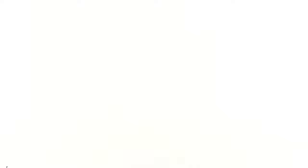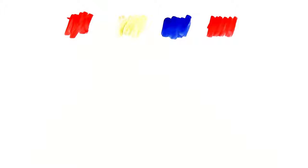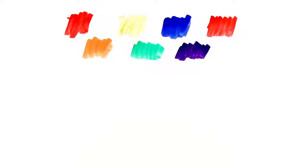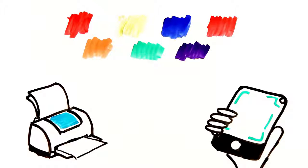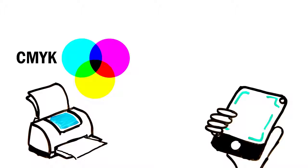Growing up, you likely learned about the primary colors red, yellow, and blue, and their respective complementary colors. But things are more complicated when you consider that the primary colors in your printer are magenta, yellow, and cyan.